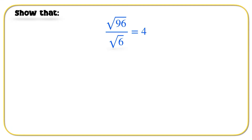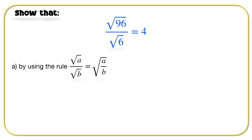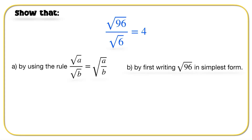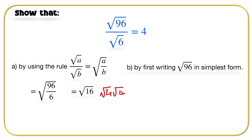We're nearly there — last question. Show that, using all the rules learned so far, root 96 divided by root 6 equals 4. For part A, using the rule root A over root B equals root of (A/B): we write root 96 over root 6 as root of 96 divided by 6 under one square root sign. Simplifying gives root 16, and root 16 equals root 4 times root 4, which gives 4.